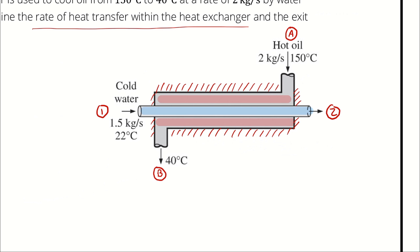So it's most convenient to assume that the specific heat capacity of the water is constant. That is reasonable, first of all, because it's one of the better options for the oil anyway. If we don't have property tables for the oil, the only way to figure out a change in enthalpy is by assuming constant heat capacity and looking that value up. Since we're already incurring that error with the oil, we might as well apply the same approach to the water.